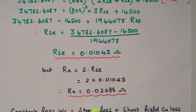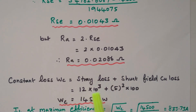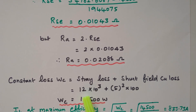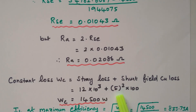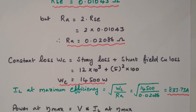Now we calculate the constant loss, which is stray loss plus shunt field copper loss. Constant loss = 12 × 10³ + ISH²·RSH = 12,000 + (5²× 100) = 12,000 + 2,500 = 14,500 watts.